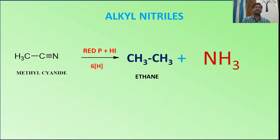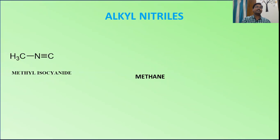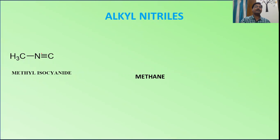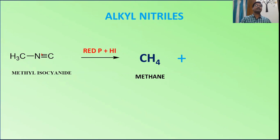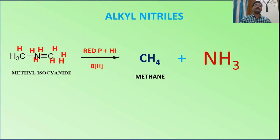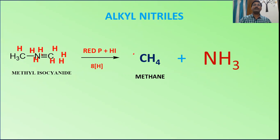For methyl isocyanide, remember that here carbon is the backbone. When treated with our reagent, the methyl group gives one methane molecule, and the isocyanide carbon also converts into another methane molecule — so you get two methane molecules in total. Eight hydrogens are needed for this conversion.